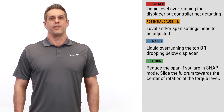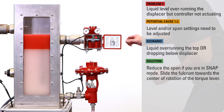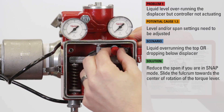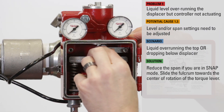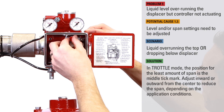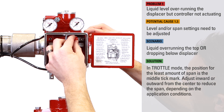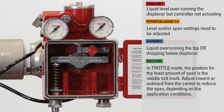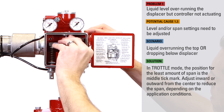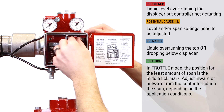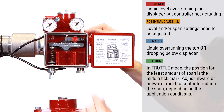You may also need to reduce the span. If you're in snap mode, this can be done by sliding the fulcrum towards the center of rotation of the torque lever. In throttle mode, span setting would typically not be the issue, but as a rule of thumb, the position for the least amount of span in throttle mode is the middle tick mark, but adjusting it inward or outward from the center tick mark could reduce the span depending on the application conditions.